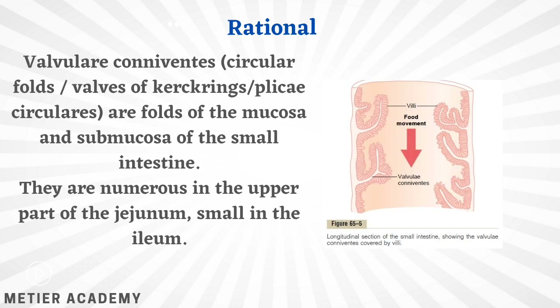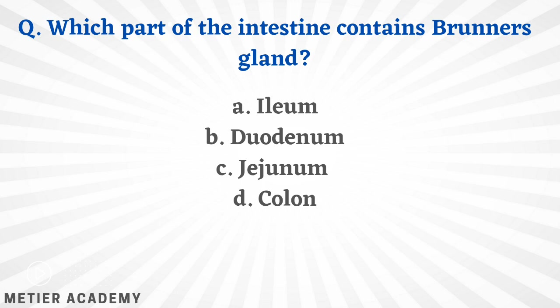The rationale: valvular conivents, also called circular folds, valves of Kerckring, or plicae circulares, are folds of the mucosa and submucosa of the small intestine. They are numerous in the upper part of the jejunum and are also present in the ileum but in lesser quantity — that's why we selected jejunum.